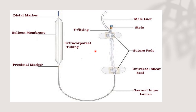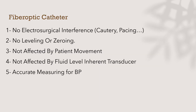The outside part of the catheter sits inside the sheath so it can be advanced or withdrawn while the sheath remains fixed. Recent intra-aortic balloon catheters use fiber optic technology, which is advantageous: there is no electrosurgical interference during cardiac surgery operations such as cautery or pacing, no need for leveling or zeroing, no effect from patient movement, and it gives accurate blood pressure measurement.